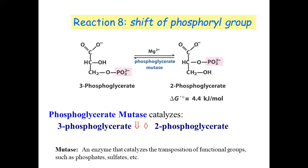Reaction number 8 is the shift of the phosphoryl group. We have isomerization — when a functional group changes its position on the carbon chain — and here specifically the phosphate shifts from position number three. The enzyme involved in this isomerization is mutase.